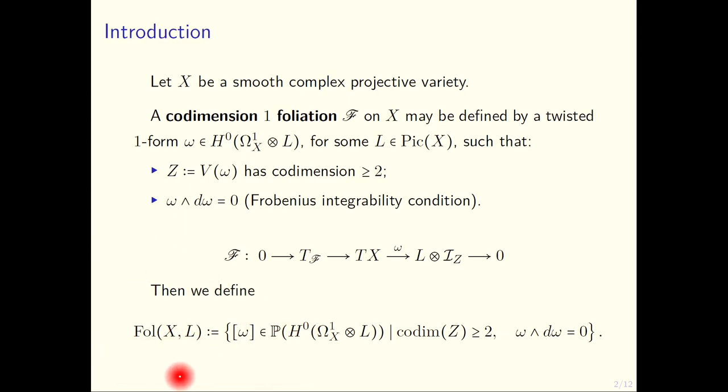When you define the space of foliations on X with this line bundle L, which fixes the normal line bundle, you take the class of forms up to scalar multiplication that have both properties. Sometimes in the literature people take the closure of these things.